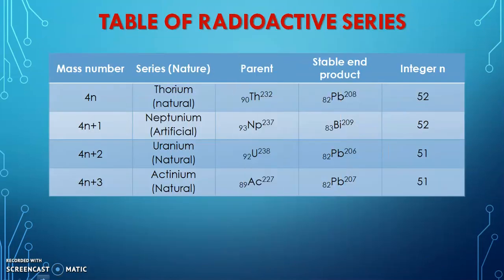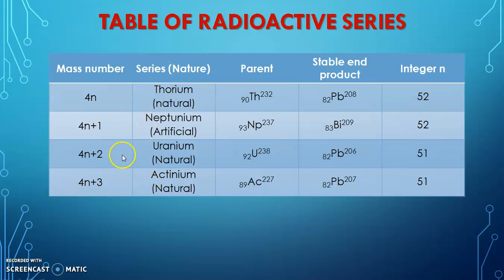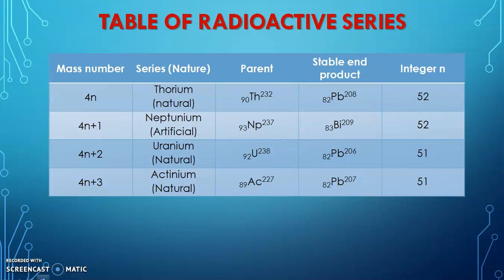Let's conclude with this table showing the mass number, series name, parent name, and end product. We can remember by reading from bottom to top: A-U-N-T, that is Actinium, Uranium, Neptunium, Thorium — you can remember it for easy reference. Here also: thorium is 4n, neptunium is 4n+1, uranium is 4n+2, and actinium is 4n+3 series. All the parents and stable end products are also shown. This video is a very short introduction for going on to study the radioactive series in detail.